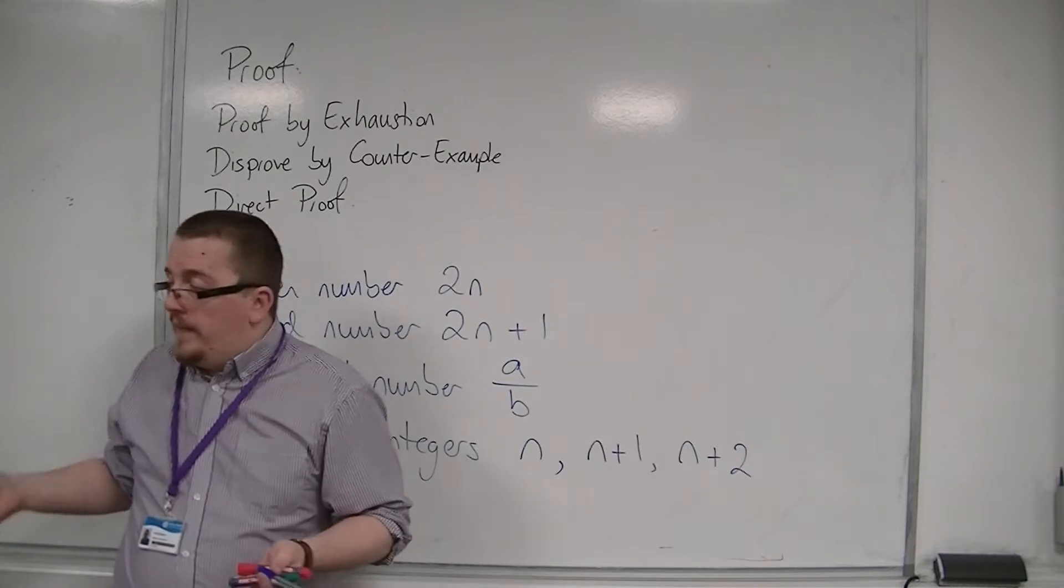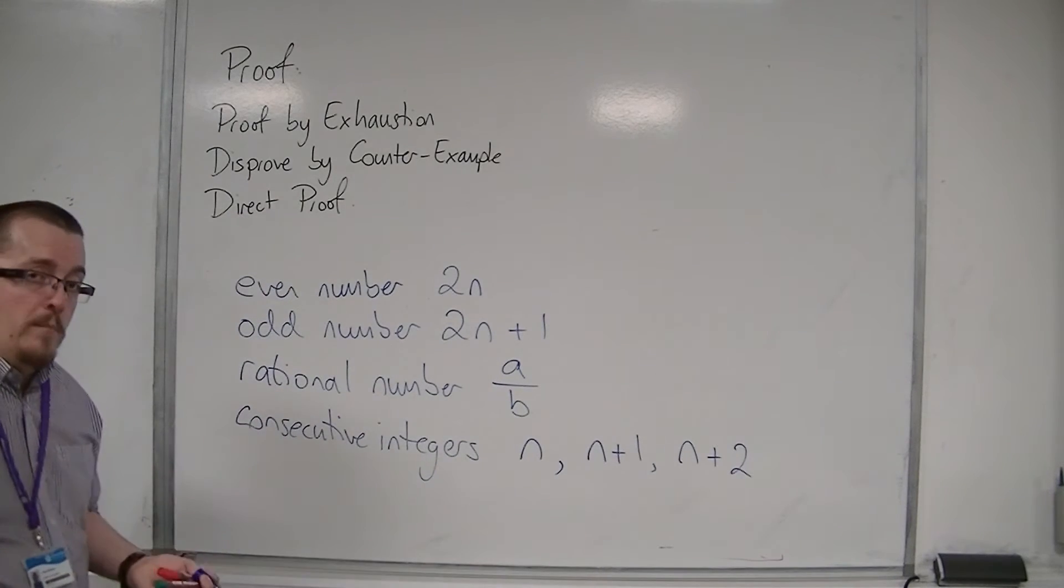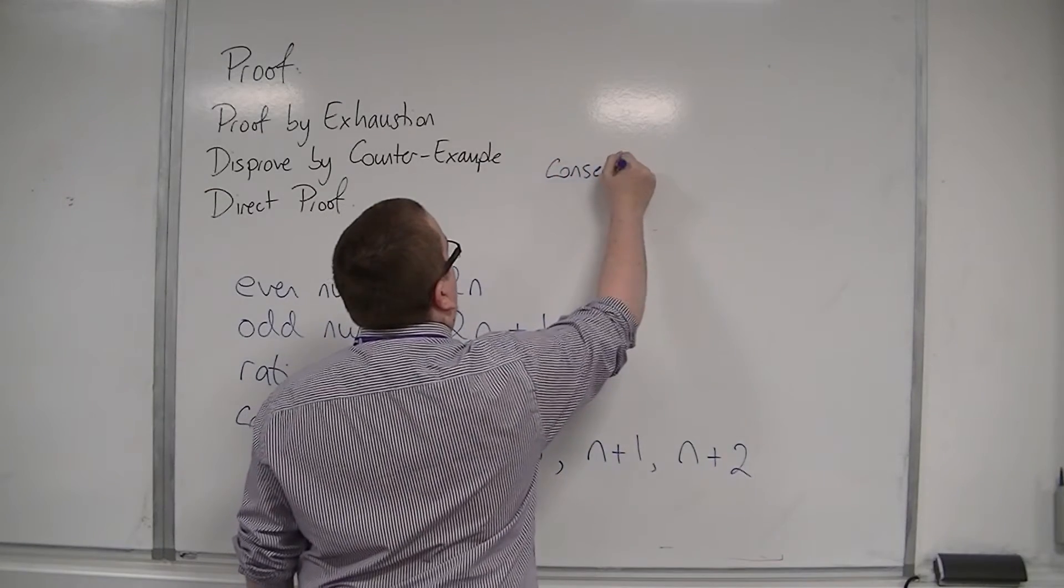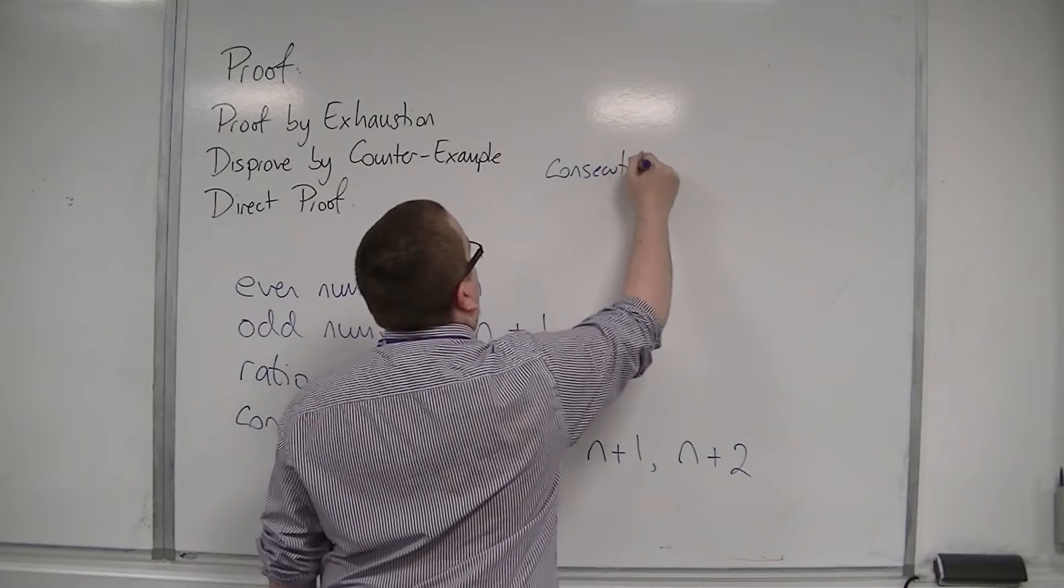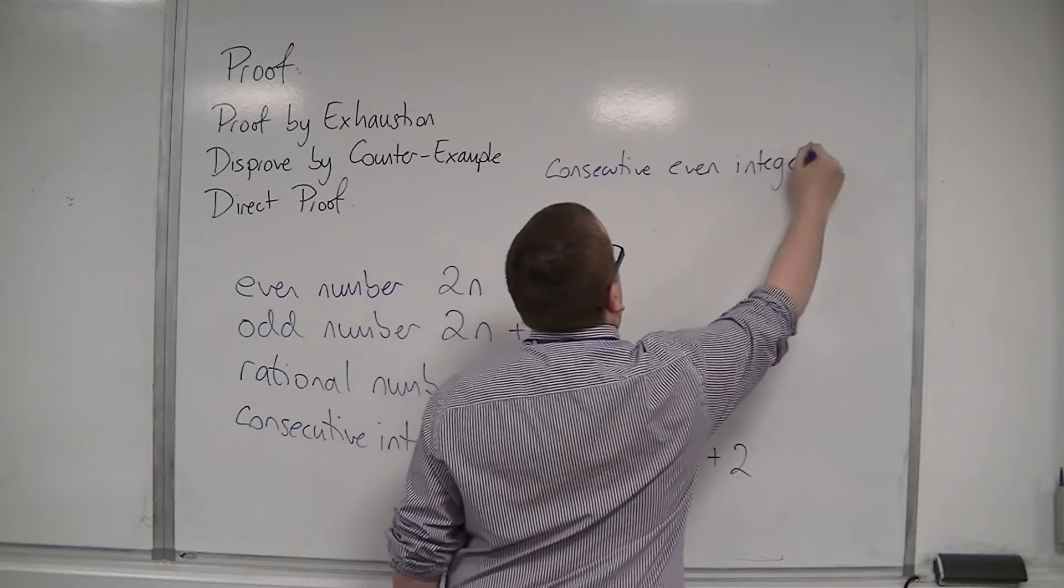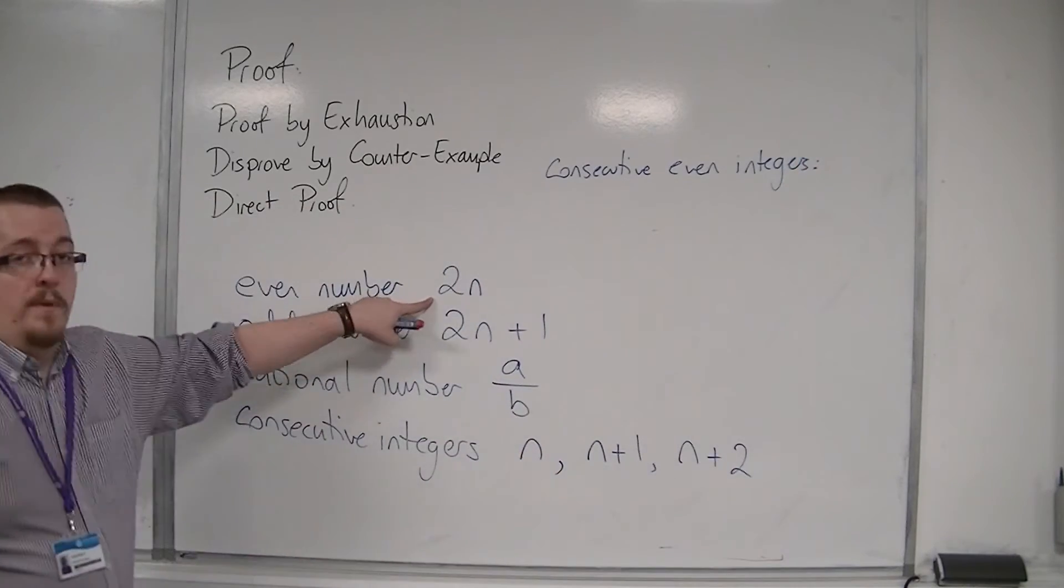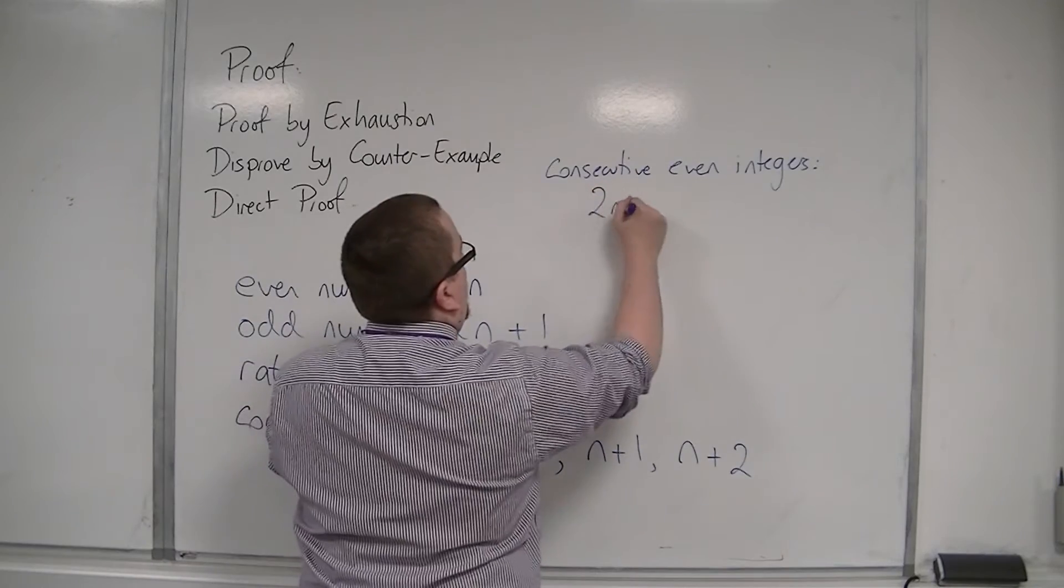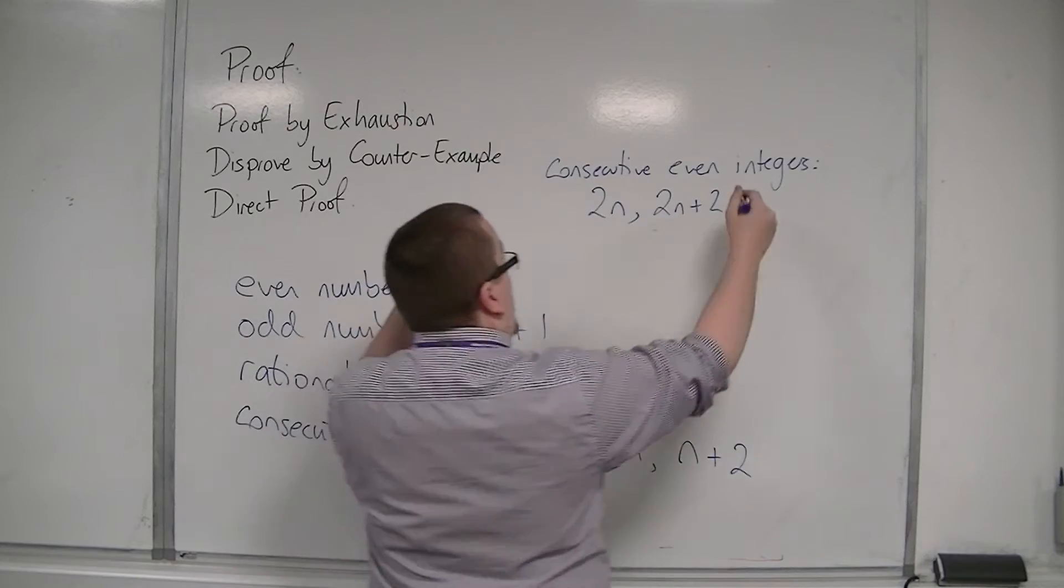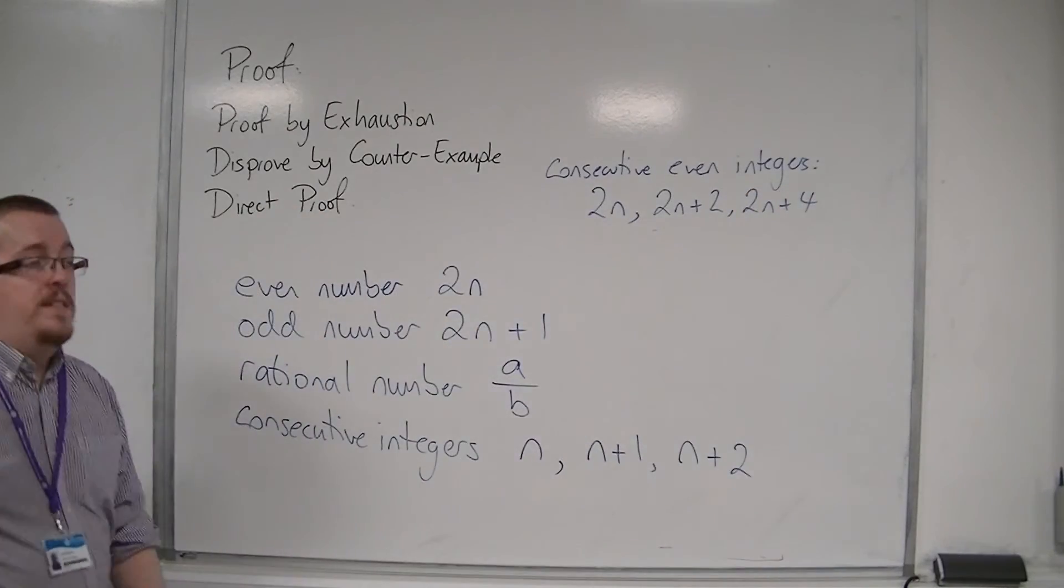And likewise, you could have things like consecutive even numbers or consecutive odd numbers. If you were looking at consecutive even integers, then if you started off with our even number there, 2n, then the next one along would be 2n plus 2, and the next one along would be 2n plus 4. So they would be consecutive evens.